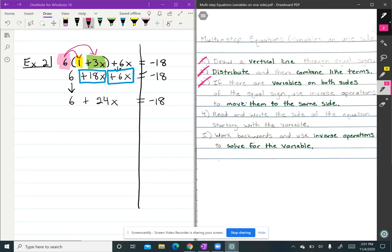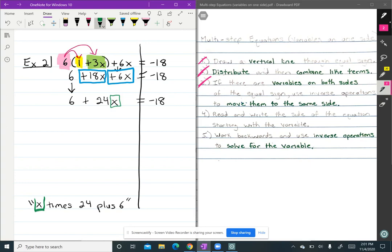Now we have a two-step equation, so we can read and write the side of the equation starting with the variable. So in this case, our variable is X. So I would read this as X times 24 plus 6. Now I wrote this at the bottom of the screen because that's where I have space. So now I'm going to work backwards using inverse operations to solve.